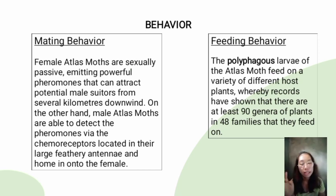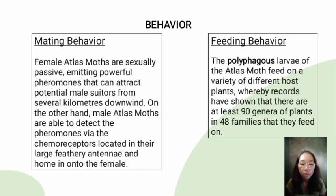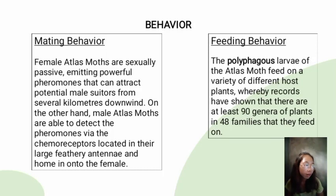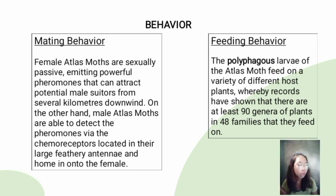Next is the feeding behavior. The larvae are polyphagous — they feed on a variety of different host plants, with records showing at least 90 genera of plants in 48 families. Polyphagous means they are equipped with detoxification enzymes, so they can feed on many different host plants. However, they ignore other parts of the plant such as developing leaves, flowers, and woody stems.